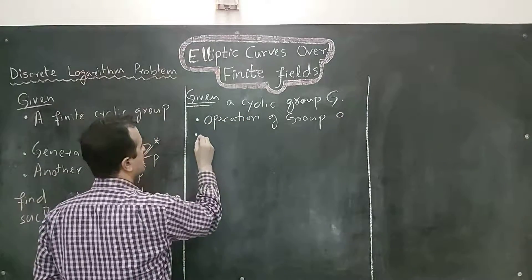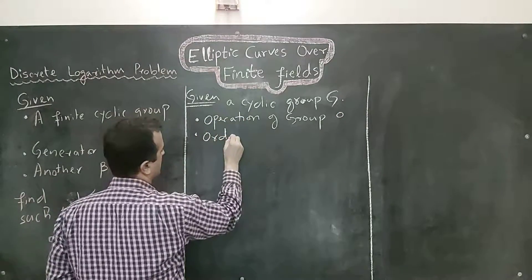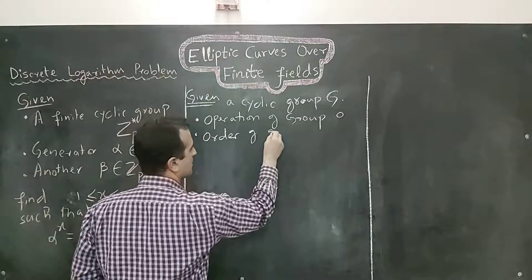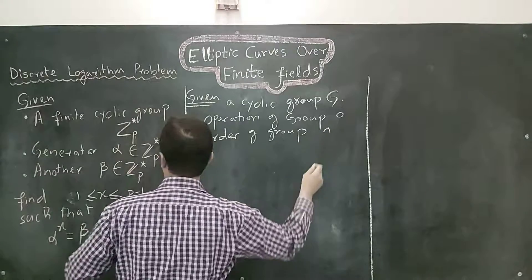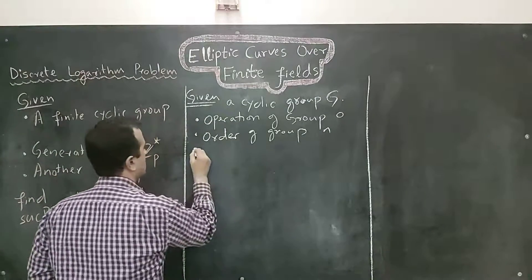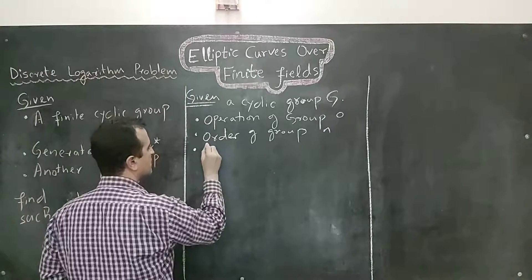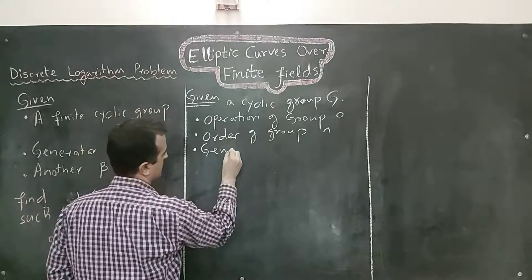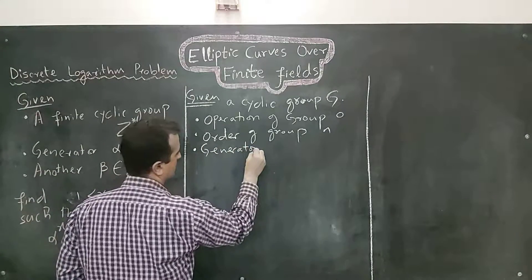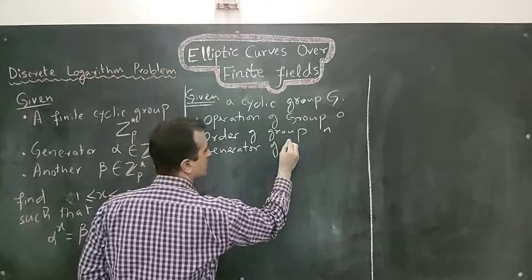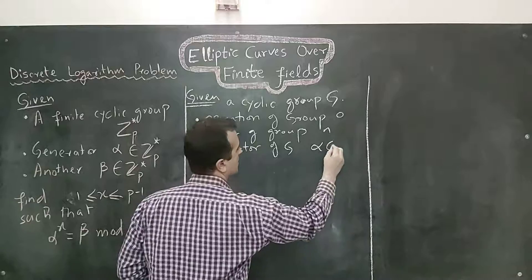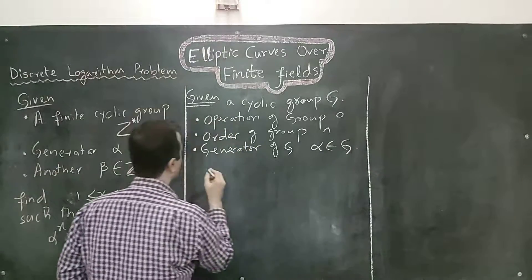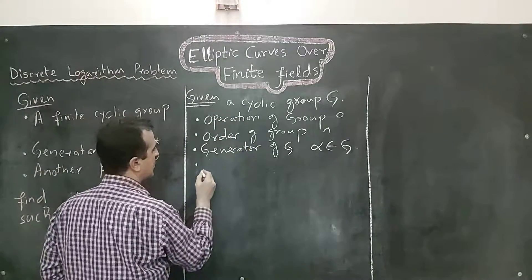The order of the group is n. In this case, the order of the group was p-1. We are given a generator of the group alpha. We are also given another element beta.